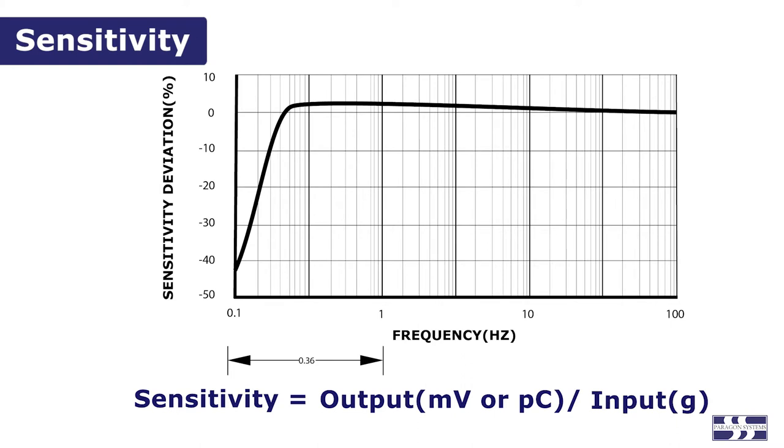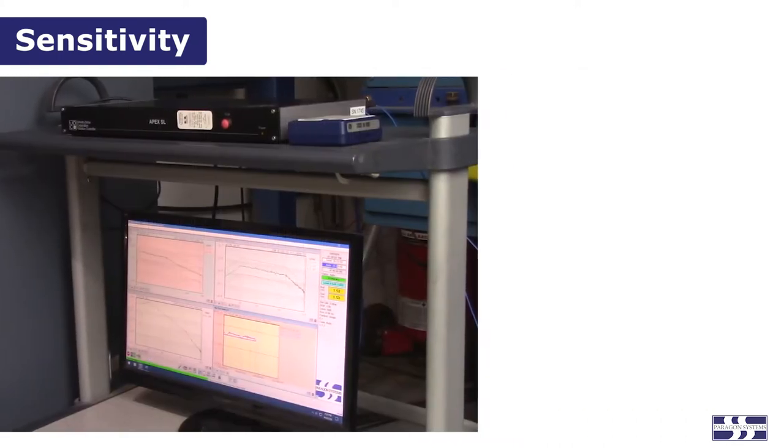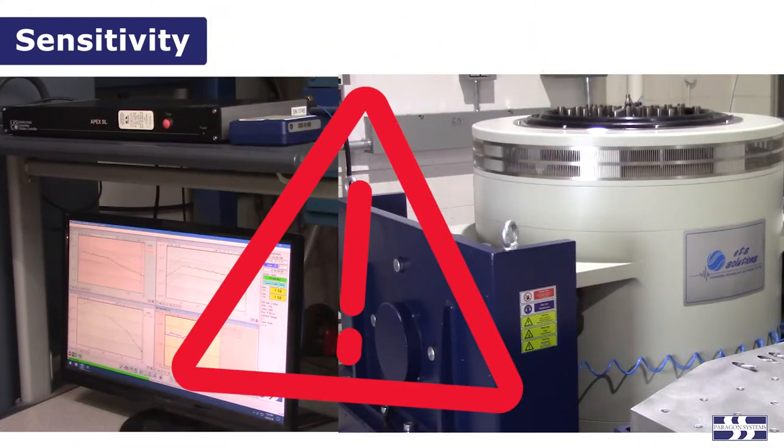If you're performing a test at a low level, for instance like 0.25 Gs RMS, it's necessary to select an accelerometer that has a high sensitivity, otherwise the controller will not receive a signal higher than the background electrical noise and will be unable to control the shaker.